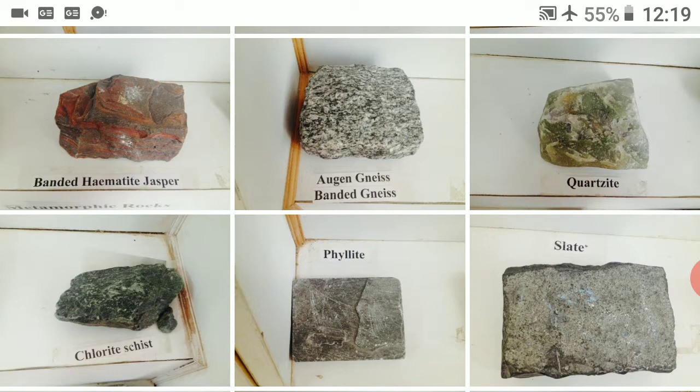Metamorphic rocks are formed from pre-existing rocks that are altered into some other rock. For example, sandstone will be converted into quartzite, shale will be converted into quartzite, and limestone will be converted into marble. In this way, some rocks are altered and converted into other rocks.